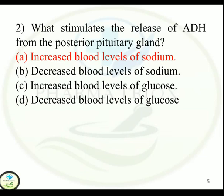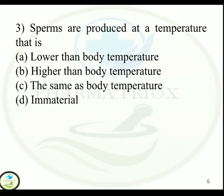Question 3: Sperms are produced at a temperature that is — Option A: Lower than body temperature. Option B: Higher than body temperature. Option C: The same as body temperature. Option D: Immaterial. Correct answer is Option A — lower than body temperature.